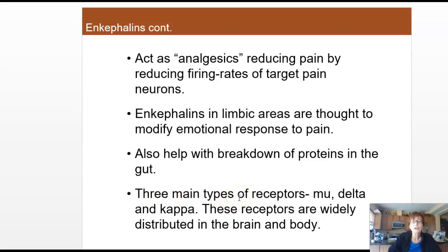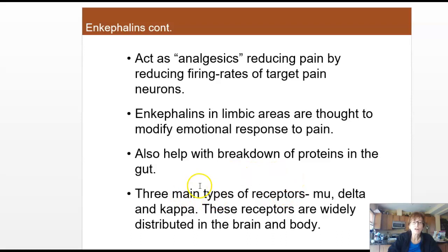What enkephalins mainly do, as you would expect an opioid to do, is act as an analgesic — meaning they reduce pain. They do this by slowing down or reducing the firing rates of target pain neurons. They can also be found in the brain in the limbic system, where they're thought to be involved with emotional responses to pain. They're also involved with the gut and the breakdown of proteins. They have three main types of receptors: mu, delta, and kappa, found all over the body.